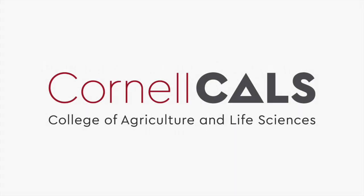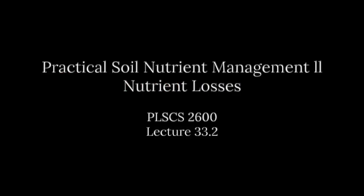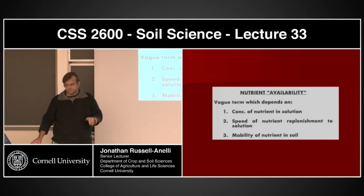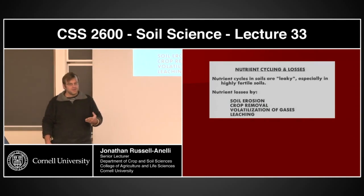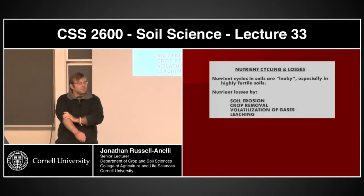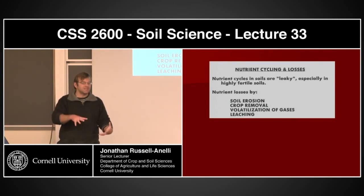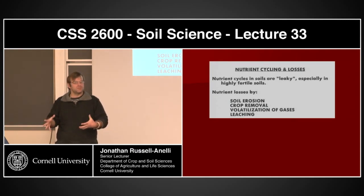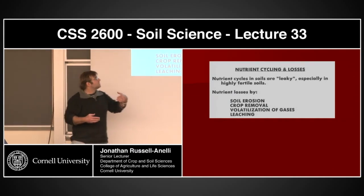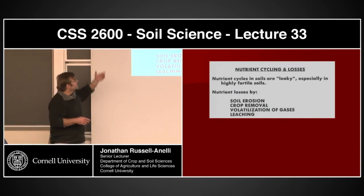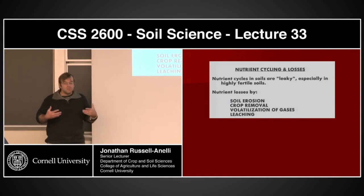This is a production of Cornell University. Let's take the next step. If we're thinking about nutrient availability, we need to start thinking about how the nutrients are getting into the system and how they're being lost from the system. This is where we get back to nutrient cycles and their losses. Nutrient cycles in soils tend to be leaky, especially in highly fertile soils.